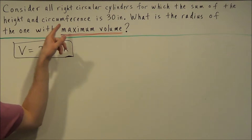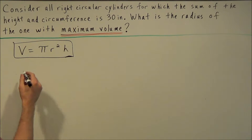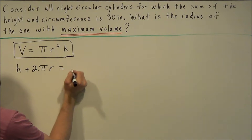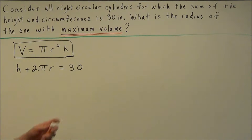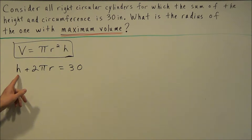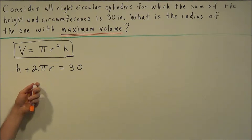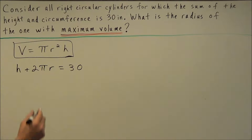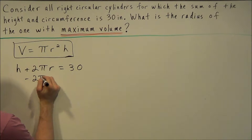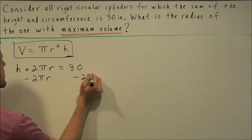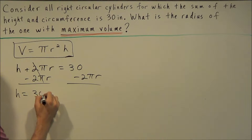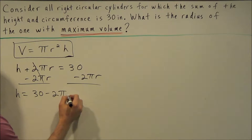The sum of the height and circumference is 30 inches, so we set up the equation h plus 2πr equals 30 — we'll worry about units at the end. The height plus the circumference has to be fixed at 30. We're going to solve for h and make a substitution into our primary equation, so we subtract 2πr from both sides. This tells us h equals 30 minus 2πr.